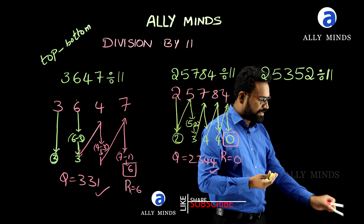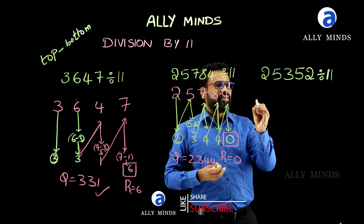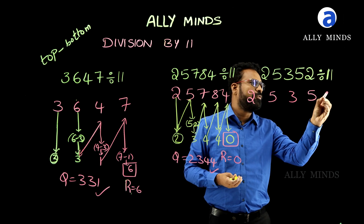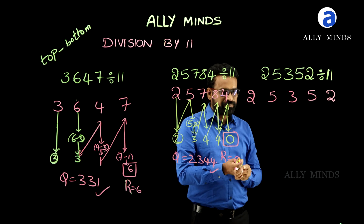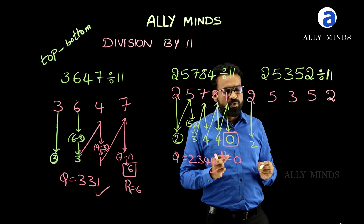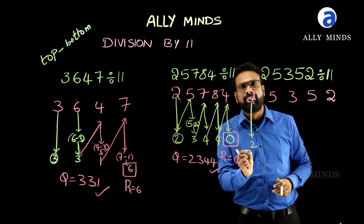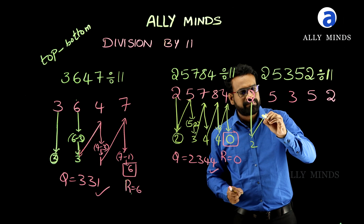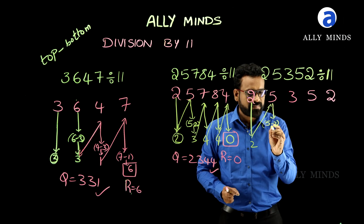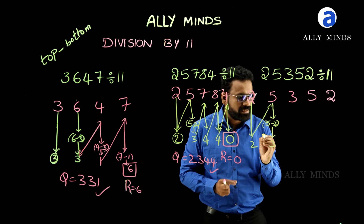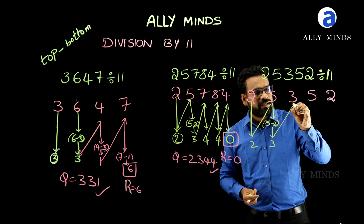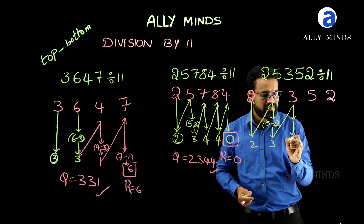Let us solve one more problem. Write the given number — 25352 is our given number. First drop this 2. We have to subtract this bottom number 2 from the top number 5. 5 minus 2 is 3. Again, subtract this bottom number 3 from the top number 3. 3 minus 3 is 0.